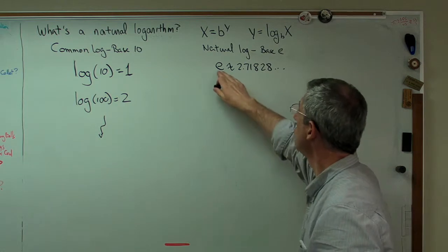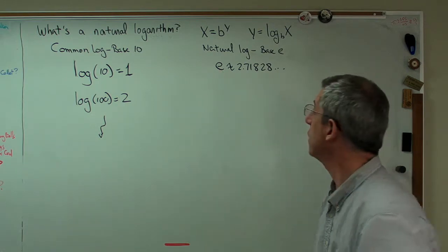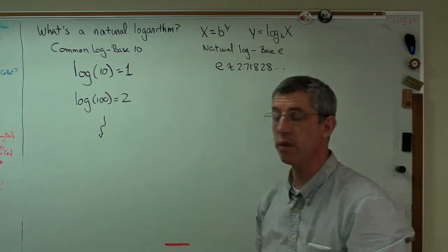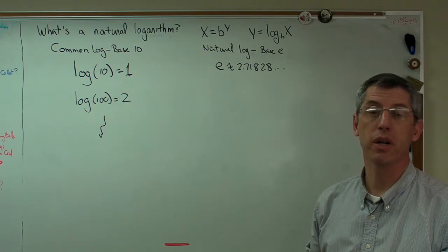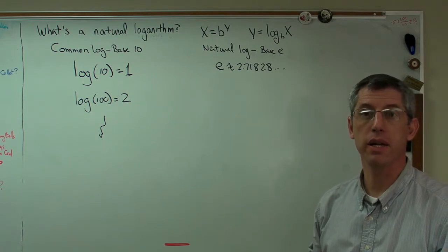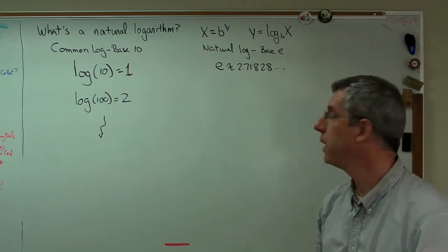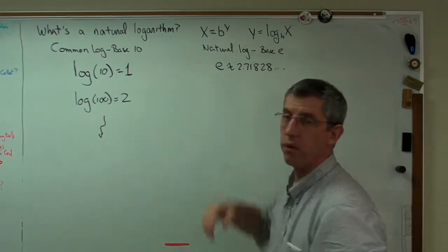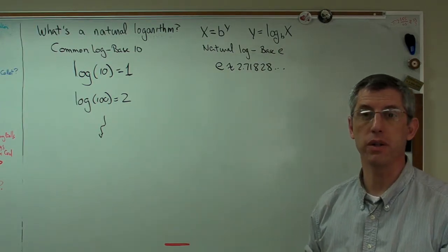And E is approximately 2.71 and something. Remember, it's just a number. And it can use as a base for logarithms. It turns out to be a little more convenient to use E as a base than it is to use 10 for a base. Now, you can use any number for a base. There's no mathematical reason not to.